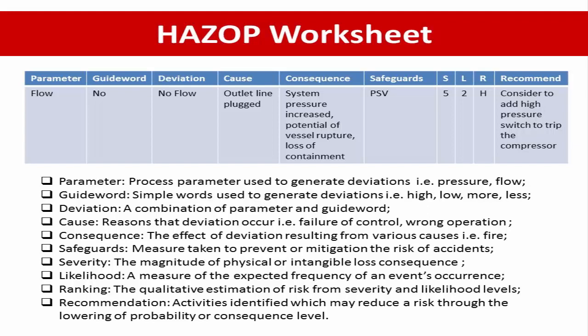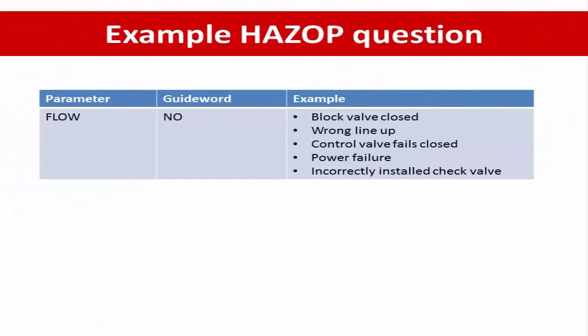When considering severity, we evaluate without relying on the safeguard — so if the system has overpressure and loss of containment, the severity rating may be 5. For likelihood, we check the experience of the team members. Then we determine the risk ranking. If the risk is not acceptable, we must provide a recommendation. Example causes for a 'no flow' deviation include: block valve at outlet is closed, wrong write-up by operator, control valve failure, power failure, or incorrectly installed check valve.